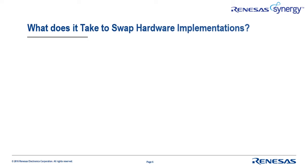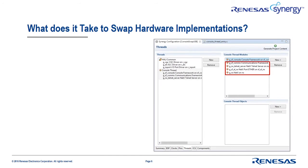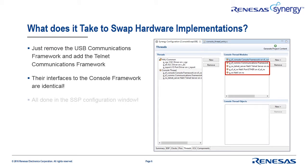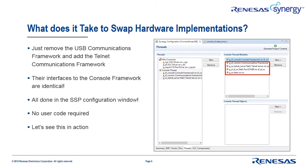With the interfaces between the console framework and the communications framework being identical, it's possible to swap out a USB communications framework for an Ethernet communications framework by just using the SSP configuration window. You can simply remove the modules used for the USB communications framework and replace them with the Ethernet communications framework, as shown in the figure on the right. And you don't need to write any code!